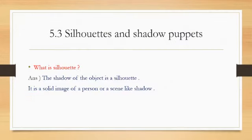Topic 5.3 is still hearts and shadow puppets. What is meant by still heart? Do you remember? A still heart is the shadow of an object. It is a solid image of a person or sceneries or a scene, like a shadow.